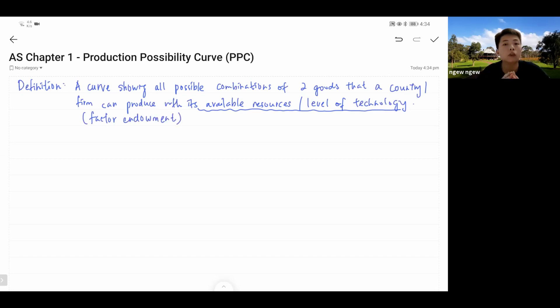Factor endowment basically includes everything: your resources, your skill, your level of technology, your climate, your weather, or whatsoever. So, this is the definition for PPC.